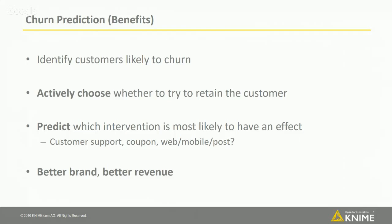The benefits of being able to predict churn: if we can identify customers who are likely to churn, we can actively choose whether to try to retain them. We can also predict which intervention is most likely to have an effect — better customer support, a discount coupon, or a special offer delivered via web, mobile, or traditional post. The main business benefits are a better brand and better revenue.